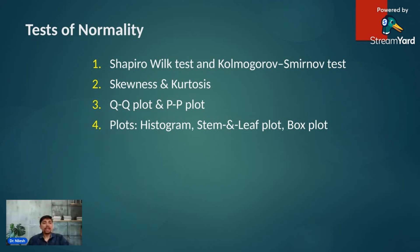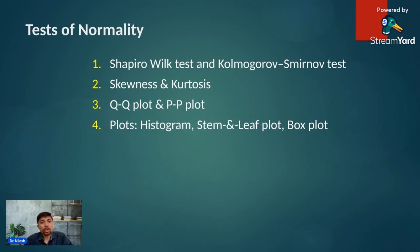Now, what are the ways to test your data for normality? We have two statistical tests: the Shapiro-Wilk test and the Kolmogorov-Smirnov test. Additionally, we can assess data for skewness and kurtosis, visualize data using QQ and PP plots, or use diagrams like histograms, stem-and-leaf plots, or box plots to see whether our data follows normal distribution.